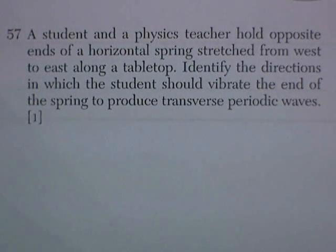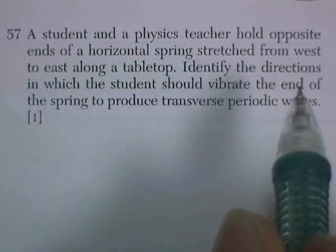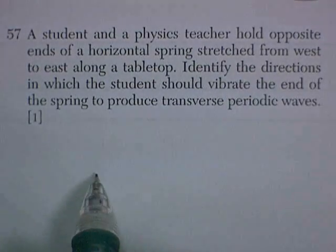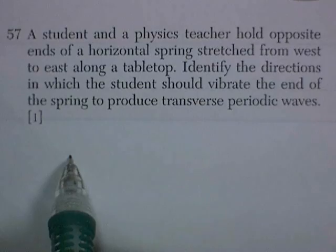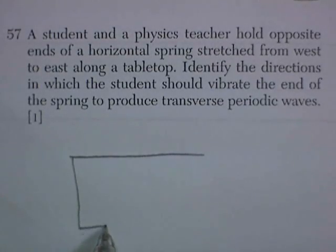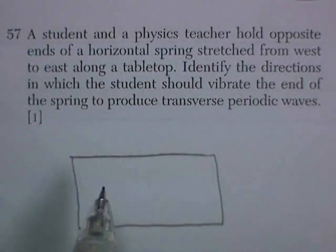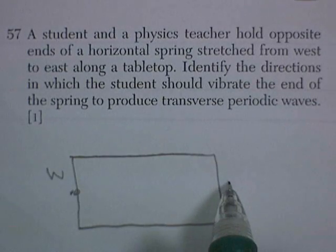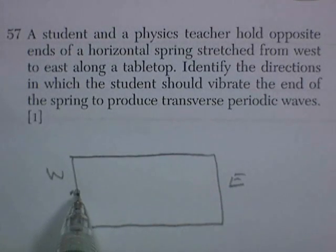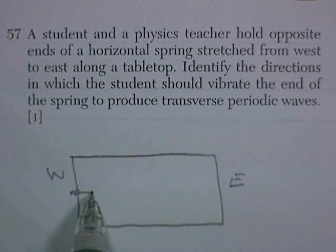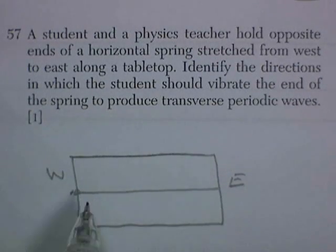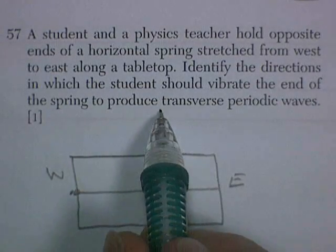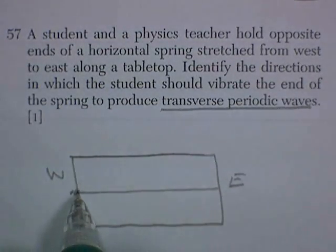All right, question 57. A student and a physics teacher hold opposite ends of a horizontal spring stretched from west to east along a tabletop. Okay, the tabletop is going to help do this problem for us. So here we are. We're west. And here's east. Now the tabletop prevents this from being moved up and down. So it's got to be moved side to side. And to produce a transverse periodic wave, somebody's going to have to move this north to south.